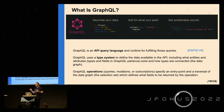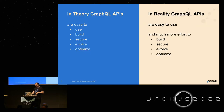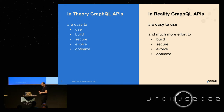GraphQL defines some top-level operations: queries separated from mutations, which are named ways of getting data or named ways of updating data, and then subscriptions for live queries. In principle, GraphQL APIs are easy to use — true — easy to build, secure, evolve automatically, and are optimized by the middleware.